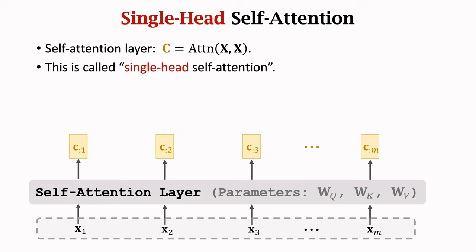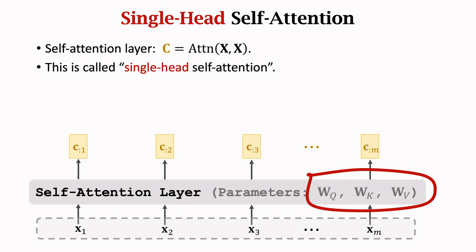We have studied the self-attention layer. To be more precise, this is called single-head self-attention. The input is a sequence of m vectors, x1 to xm. The output is a sequence of m context vectors, c1 to cm. The layer has three parameter matrices: wq, wk, and wv.